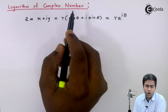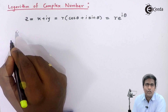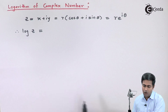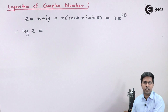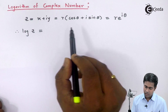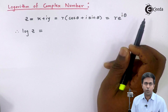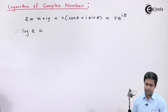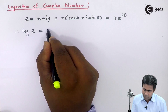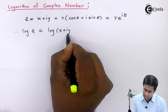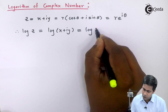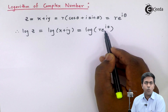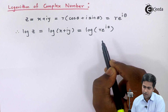Now to find out the logarithm, I will take log on both sides. So the left-hand side will become log of z. On the right-hand side, we have three forms of the complex number: Cartesian, polar, and exponential. To find out the log, we will use the exponential form. So log of z is nothing but log of x plus iy, and I will use the form r e raised to i theta because the exponential form works well with logarithm, and we can get the formula very easily.